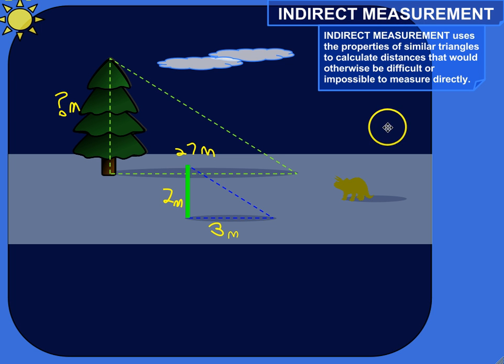Hence, since similar triangles have corresponding sides that are proportional to each other, if you measure the much smaller, easier-to-measure object, like this bright green neon glowing thing here,